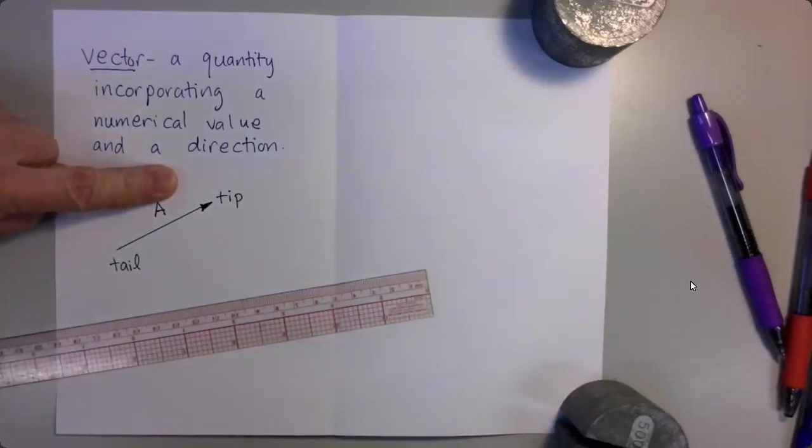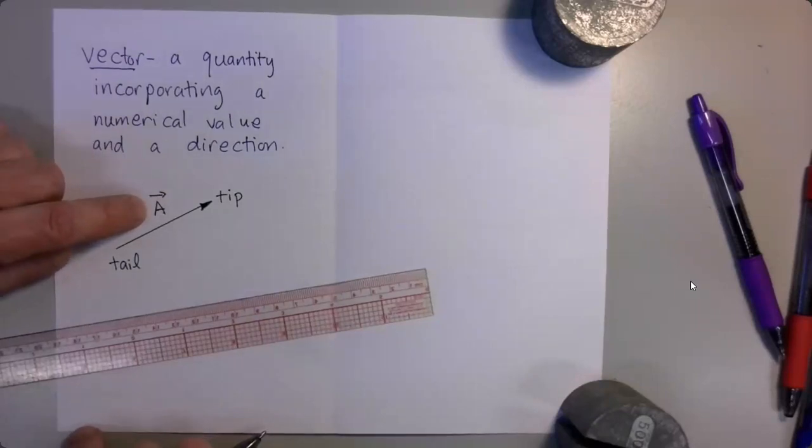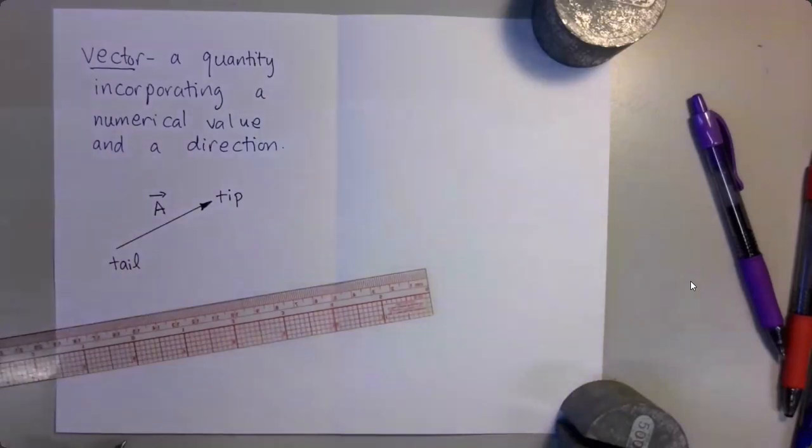If I do not have the arrow there and I just have the letter A by itself, it means something else entirely, as we will see later. So that would be wrong. If you wish to represent a vector symbolically, you have a letter of the alphabet and it must have an arrow on top.